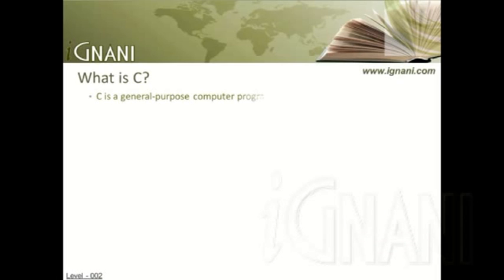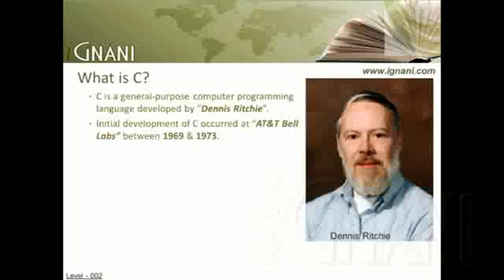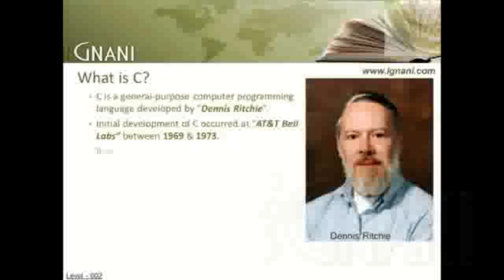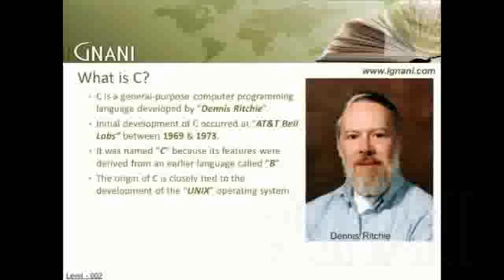C is a general-purpose computer programming language developed by Dennis Ritchie. The initial development of C occurred at AT&T between 1969 and 1973. It was named C because its features were derived from an earlier language called B, which according to Ken Thompson was a stripped-down version of the BCPL programming language. The origin of C is closely tied to the development of the Unix operating system, originally implemented in assembly language on a PDP-7 by Ritchie and Thompson, incorporating several ideas from colleagues.